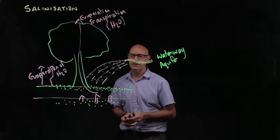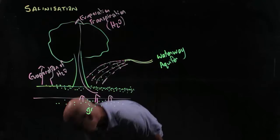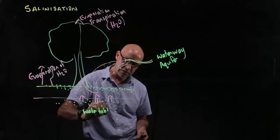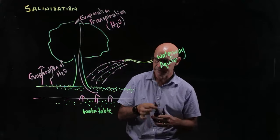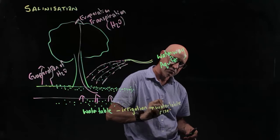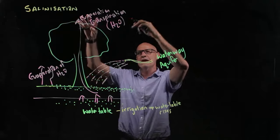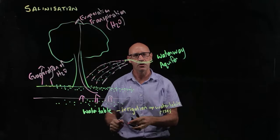So that's salinization. This is called the water table. Irrigation causes the water table to rise. The water table rises, takes salt with it, then the water evaporates off the surface and the salt remains behind.